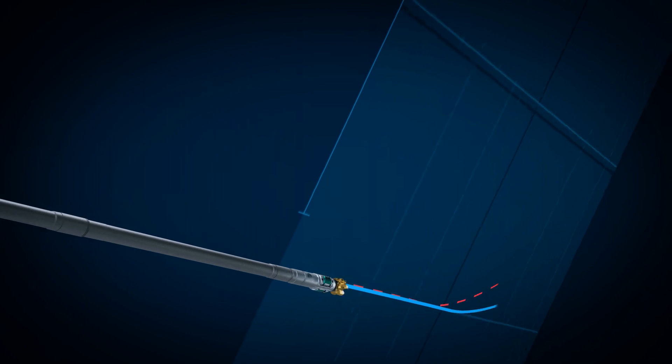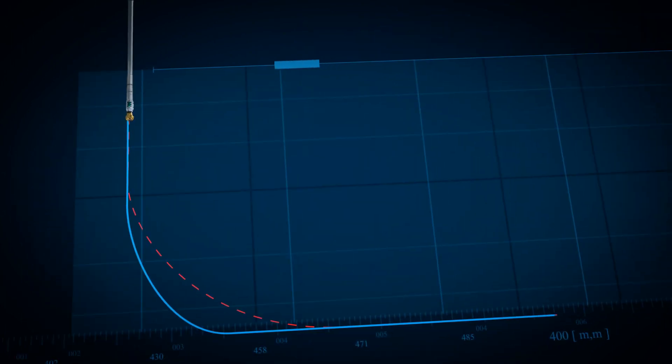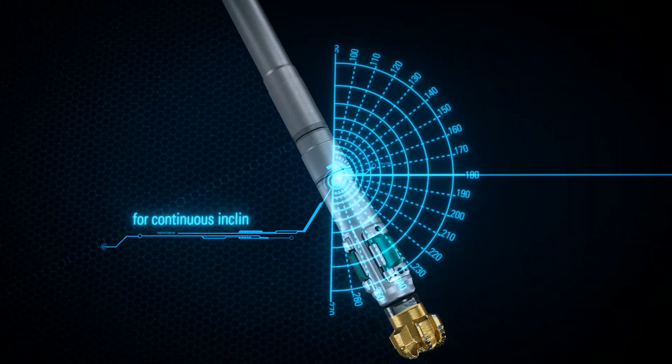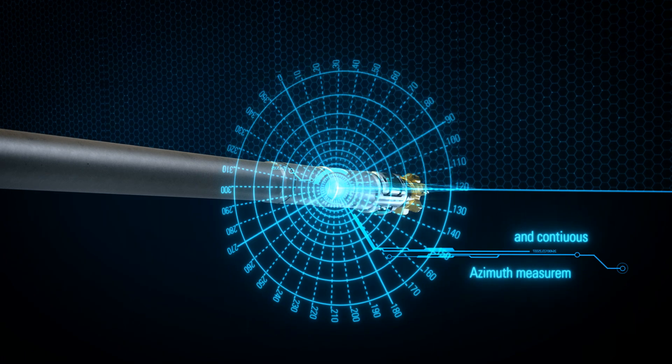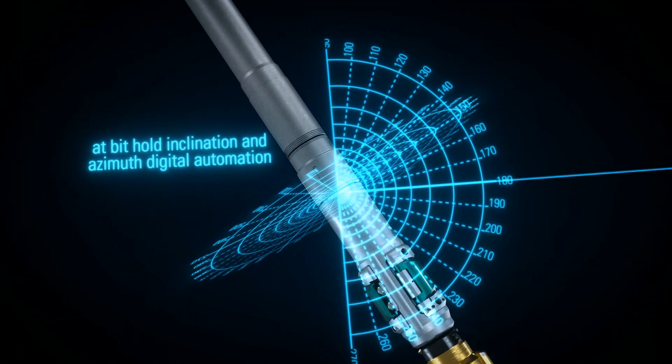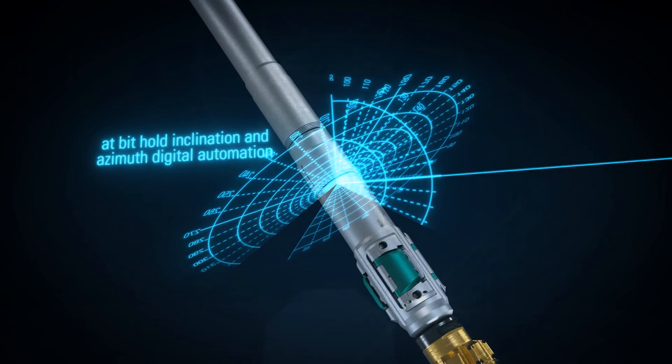It can build tighter curves than the previous generation Orbit under the same conditions. This system also includes new and comprehensive six-axis continuous inclination and azimuth measurements. The multi-axial component helps improve hold inclination and azimuth capability for accurate well placement.